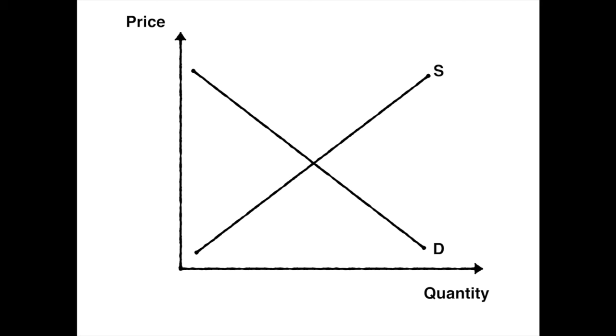Market equilibrium occurs where supply and demand intersect. This is where the market clears. Hypothetically this is a point of maximum efficiency where producer and consumer welfare is maximised. We'll examine why when we take a look at producer and consumer surplus in a future video.